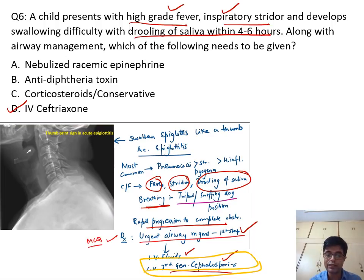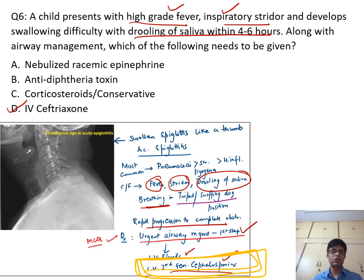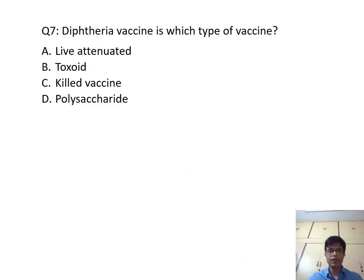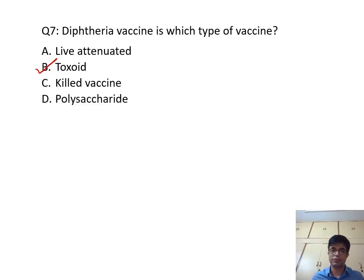This was already discussed in class notes. If you have attended any pediatric teaching and are thorough with your notes, this is mentioned there. Things are there from the notes only, but it sometimes does not occur to us in the exam. The answer is D — IV ceftriaxone — because the diagnosis is epiglottitis. This is not croup, as many of you were thinking.